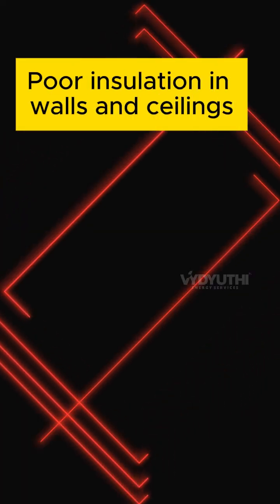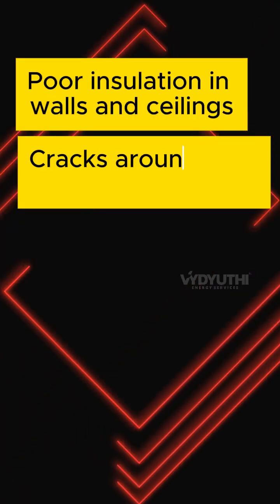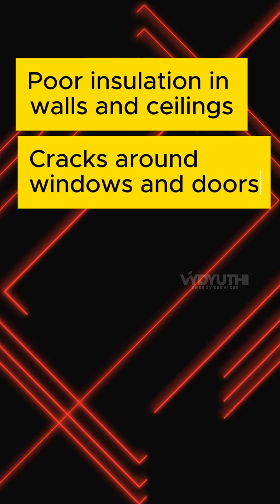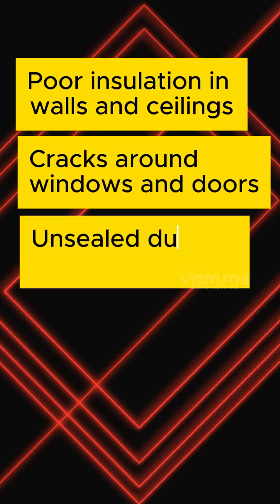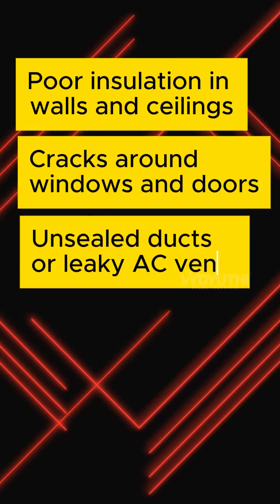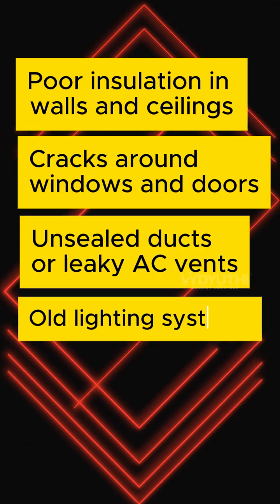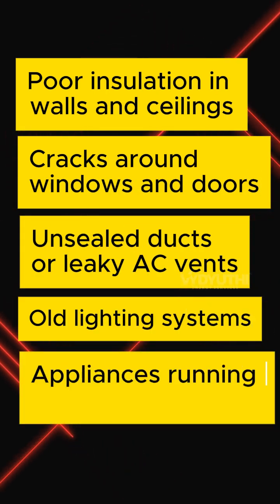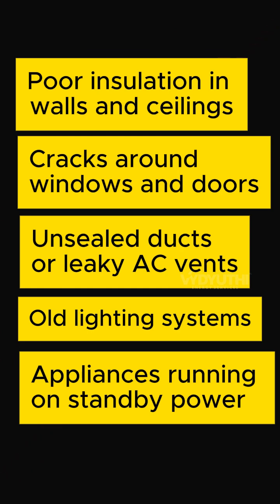Energy leaks are everywhere: poor insulation in walls and ceilings, cracks around windows and doors, unsealed ducts or leaky AC vents, old lighting systems, appliances running on standby power, and more.